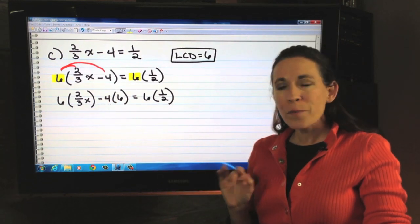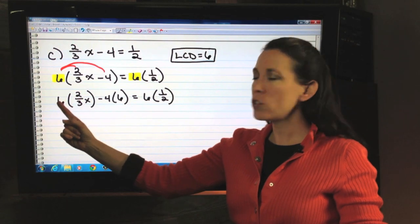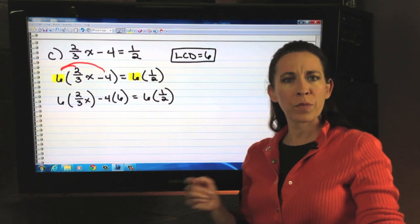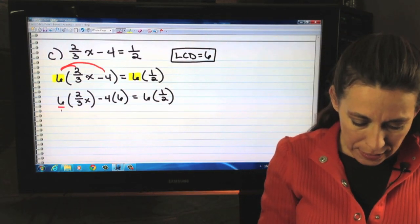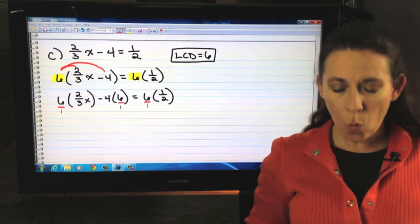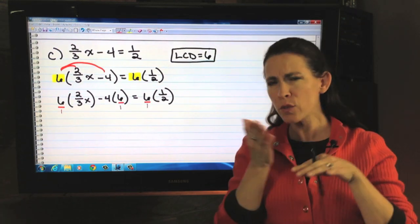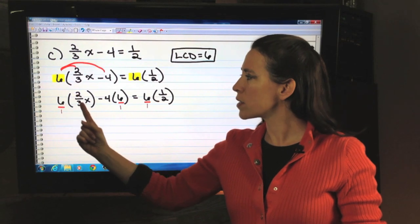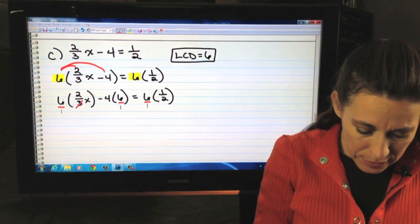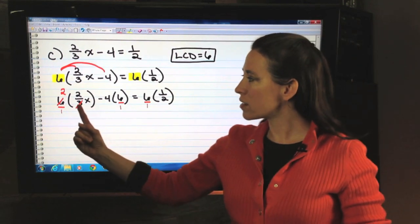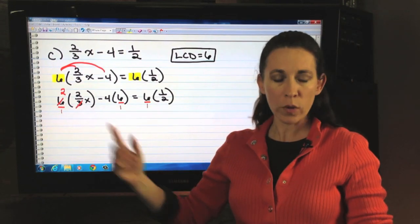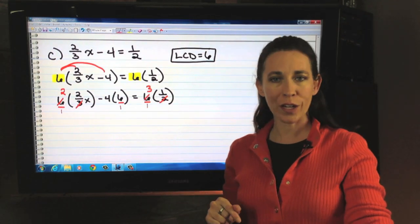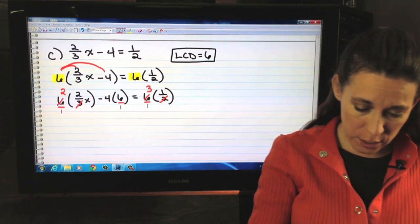The reason we're doing this is every denominator divides into that LCD evenly. Therefore, we no longer have a denominator. For some of you, it might help to write those LCDs over 1 just as a visual because some of you are still having trouble with your fractions. And that way you know that it's the 1 times the 3 and the 2 times the 6. So, 3 divides into 6 twice. Now this denominator is 1. So we don't need to write it. Same thing here. 2 divides into 6 3 times. So now this denominator is 1. So we don't need to write it. All we do is now multiply across and simplify.